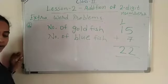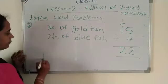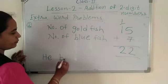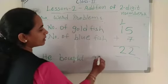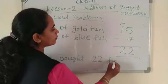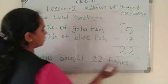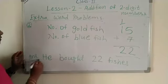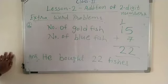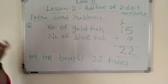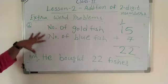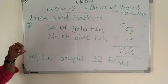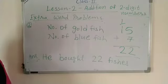So the answer is he got 22 fishes. You have to write the word problem answer like this — with the full sentence. When you write in your notebook, write the word problem sentence along with the answer.